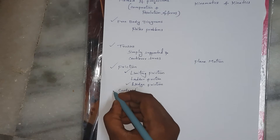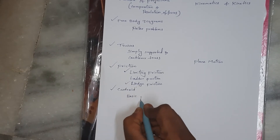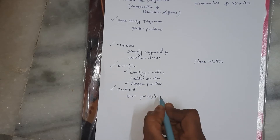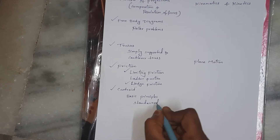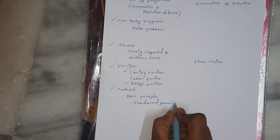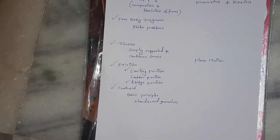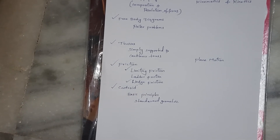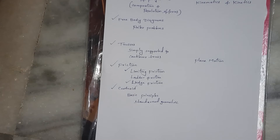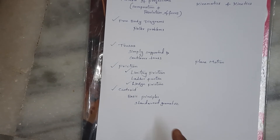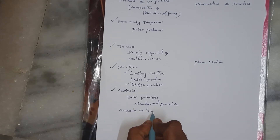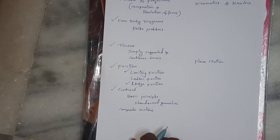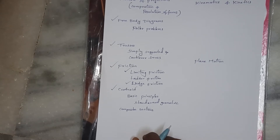Centroid: start with the basic principles and definitions. Learn the centroids of standard geometric shapes — rectangle, triangle, circle, semicircle, quarter circle, parabolic spandrel — including their areas. These derivations are important. Then move on to composite sections: L-section, T-section, C-section, and other combined shapes. Practice finding the centroid of these composite sections by cutting them into standard shapes.